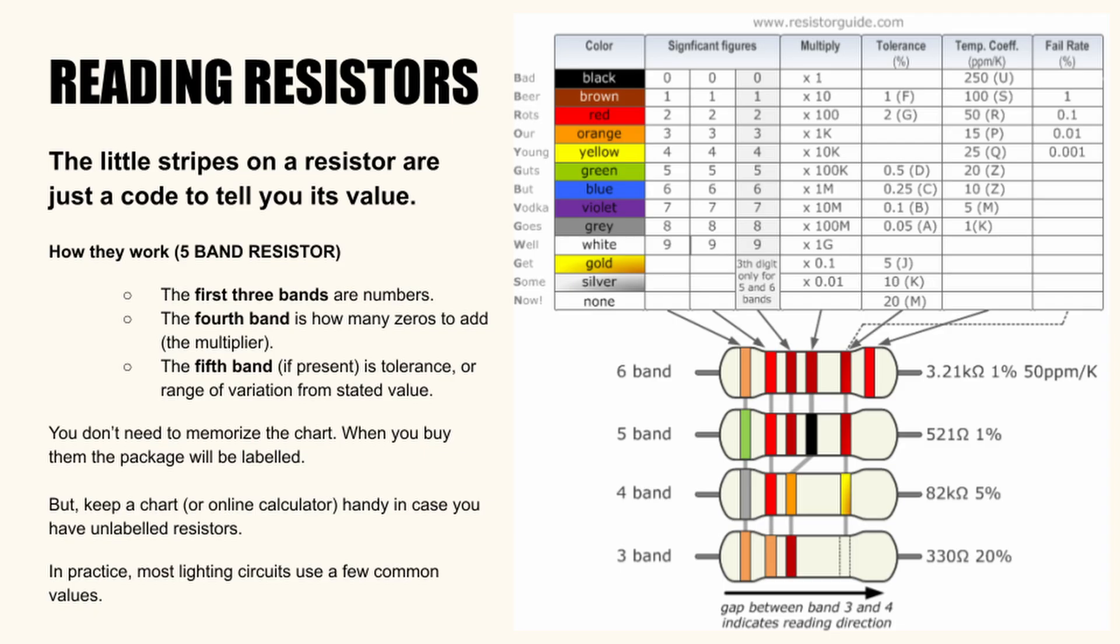Have you ever looked at the stripes on a resistor and wondered what does this mean? Don't worry. It's just a simple color code for the resistor's value. The first one, two, or three bands are the number. The fourth band tells you how many zeros to add, the multiplier. And the fifth band, if present, shows tolerance, basically how precise the value is.